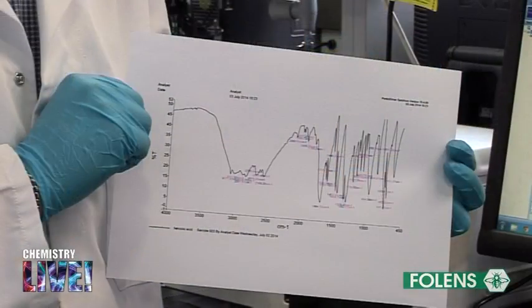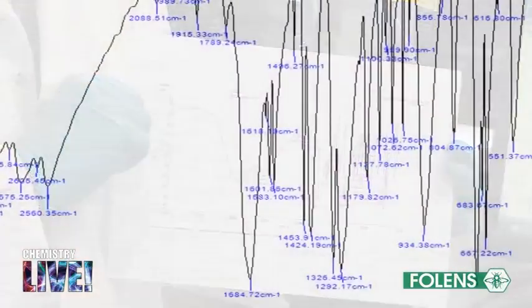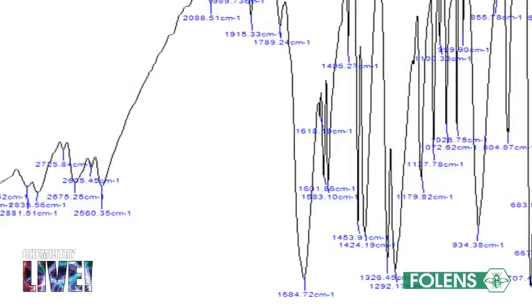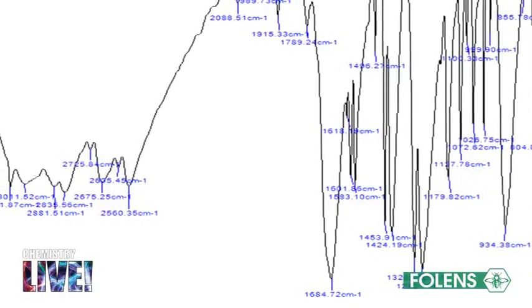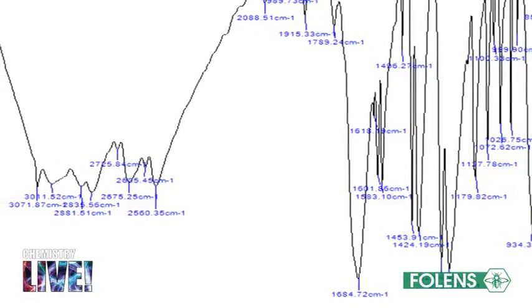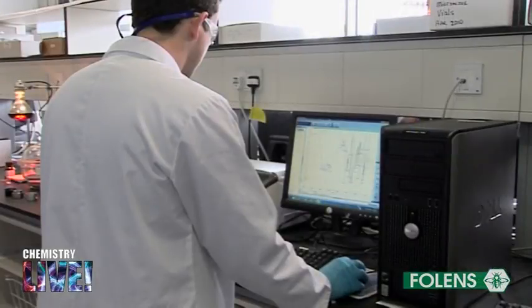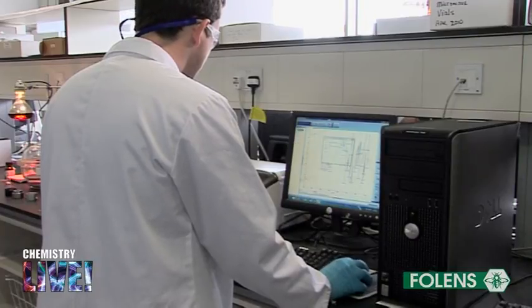This is the spectrum of benzoic acid. No other compounds have the same spectrum as benzoic acid. Databases containing thousands of IR spectra of organic compounds are available to help in the identification of compounds. Chemists can also identify the presence of particular functional groups by studying the IR spectrum of a compound.